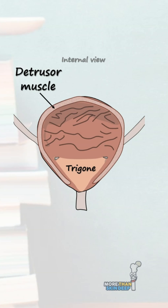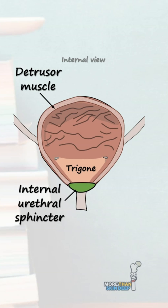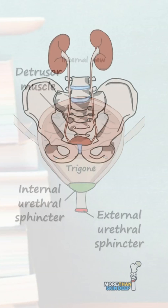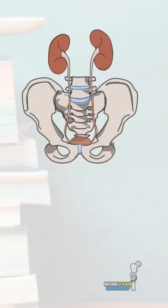At the inferior border are two sphincters: the autonomic internal urethral sphincter, which is more developed in men, and the voluntary external urethral sphincter, which is similar in males and females. And that's a quick overview of the anatomy of the bladder.